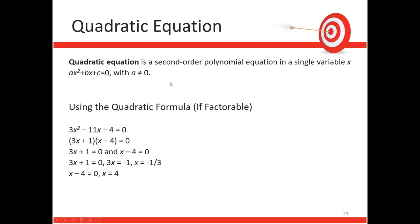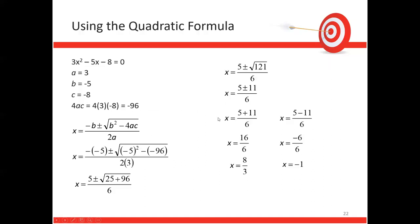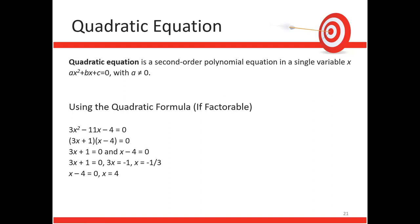Quadratic equation: a second-order polynomial equation ax² + bx + c = 0 with a ≠ 0. It can be solved by factoring. Example: 3x² − 11x − 4 = 0 factors as (3x + 1)(x − 4) = 0, giving x = −1/3 or x = 4.